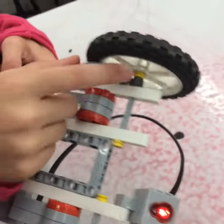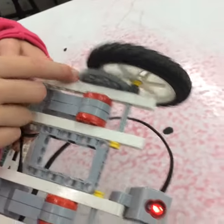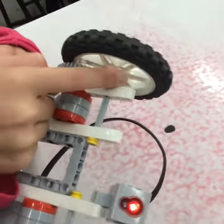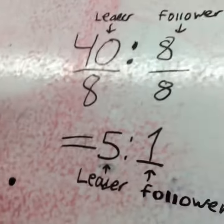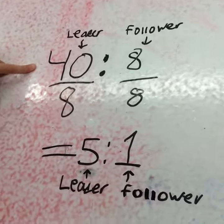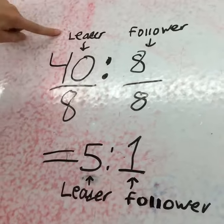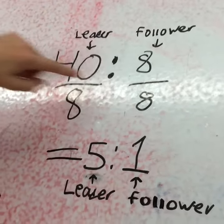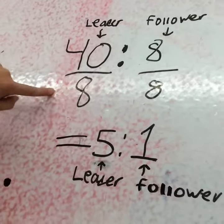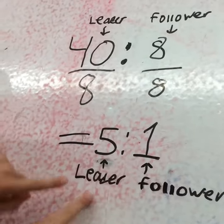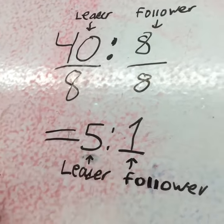So this is our leader. We used a 40 gear. And then this is our follower. We used an 8 gear. As you can see here, we have 40 as our ratio to 8. So this is the leader, and this is the follower. Then we divided each side by 8, and we got 5 as our leader and 1 as our follower, and the ratio is 5 to 1.